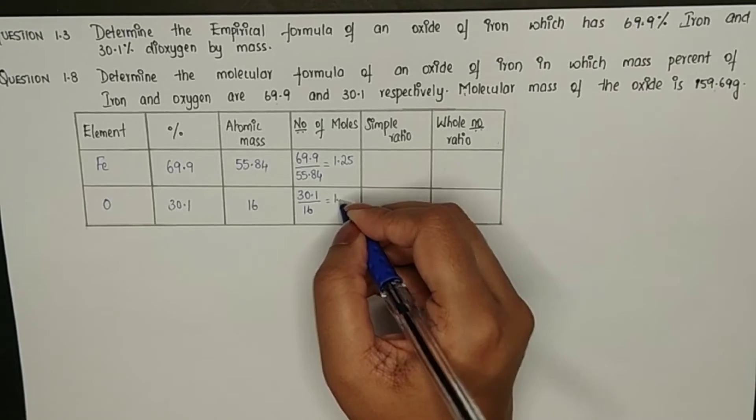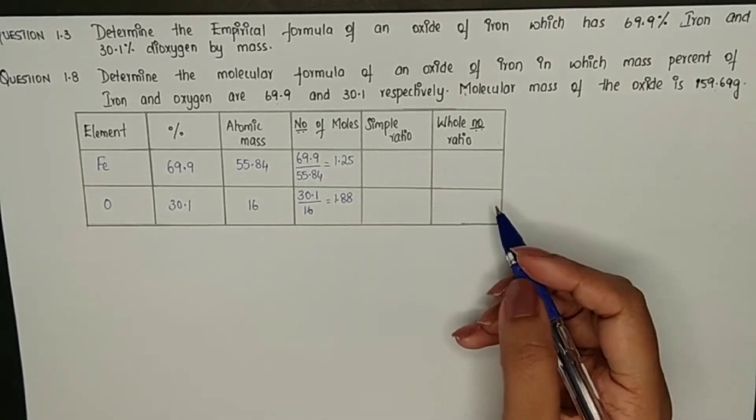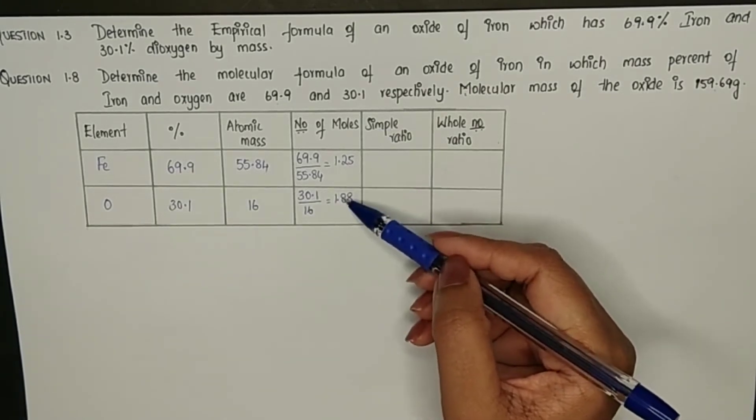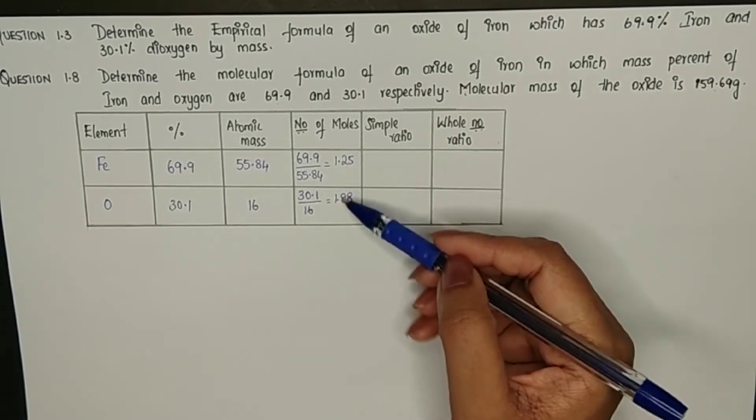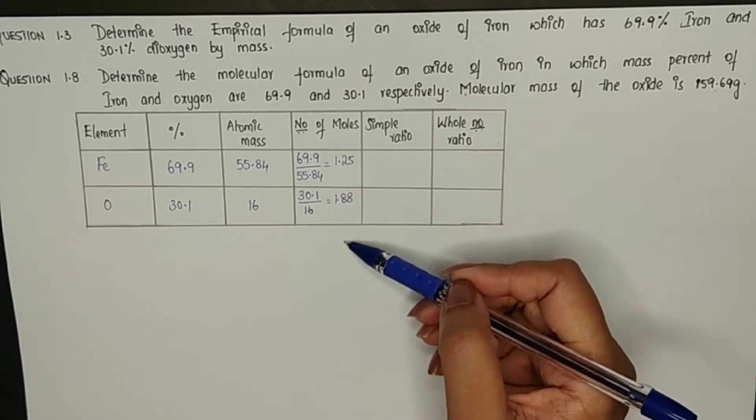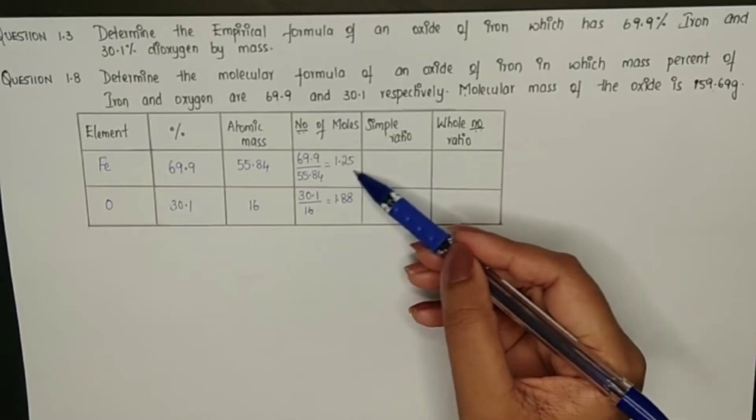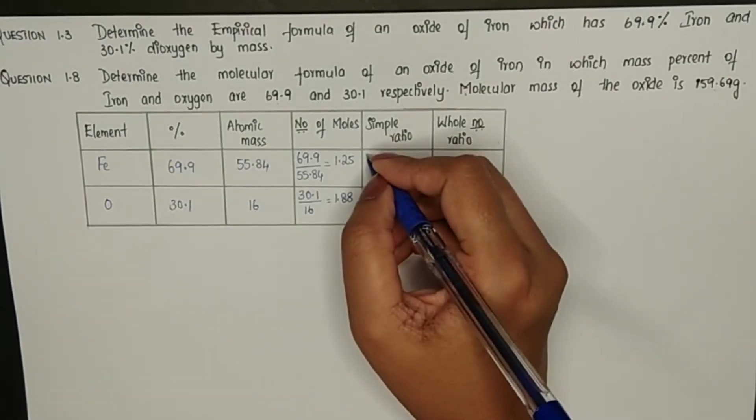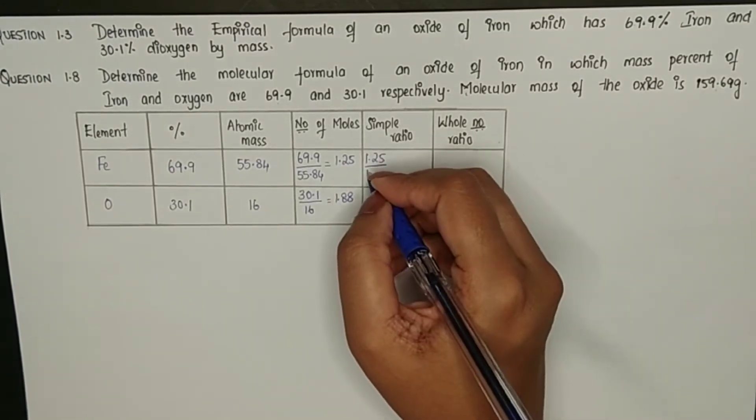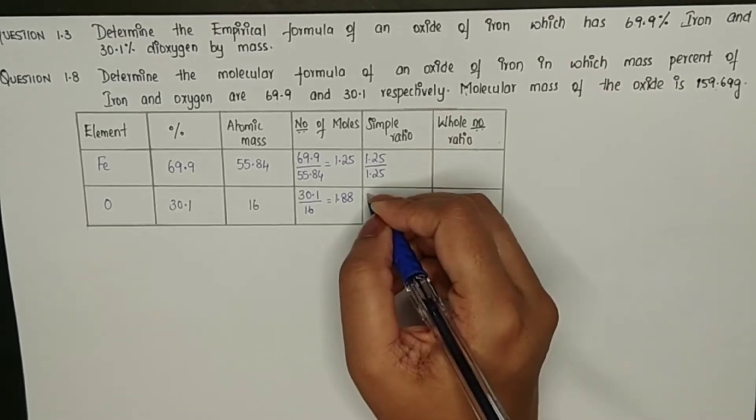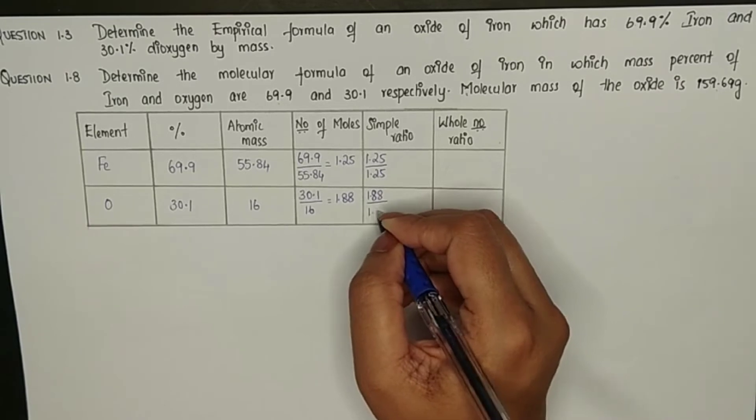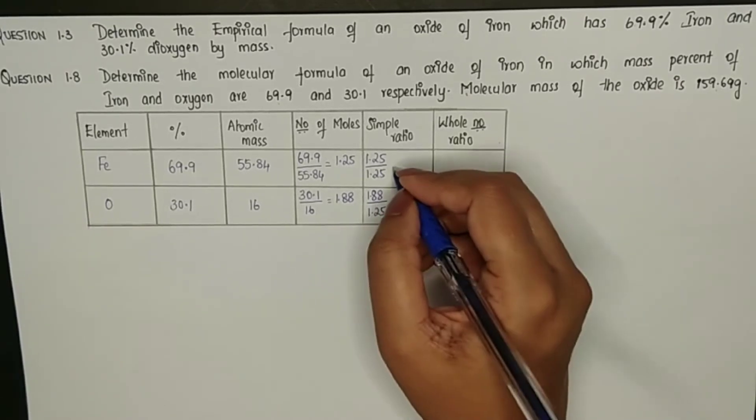Now to find the simplest ratio, we need to find which is the smallest number among both these values. 1.25 is the smallest number. So every value you get in this column has to be divided by the smallest value. So here 1.25 divided by 1.25, similarly 1.88 divided by 1.25. This will equal 1.25, this will equal 1.5.